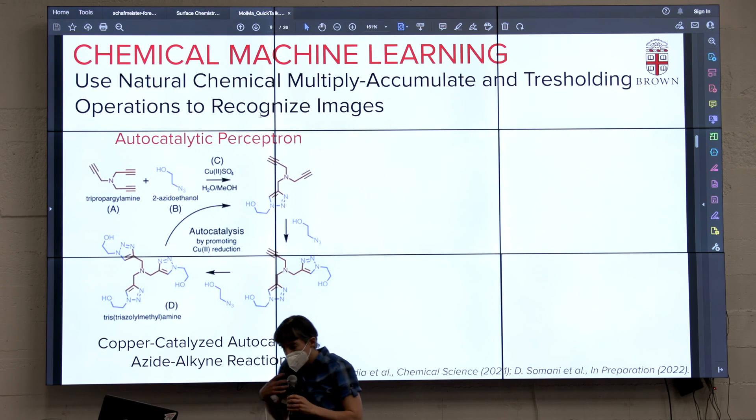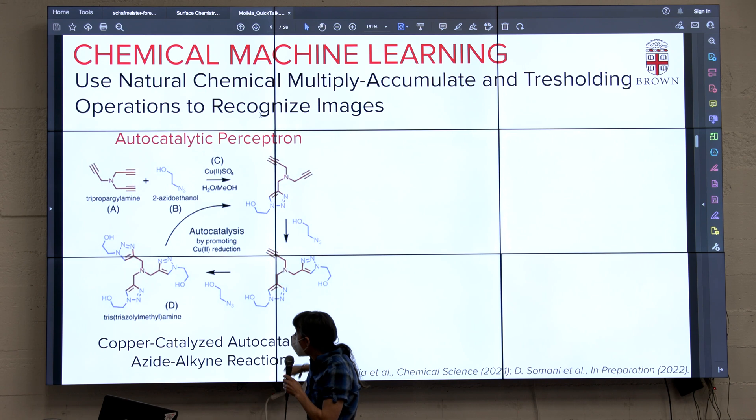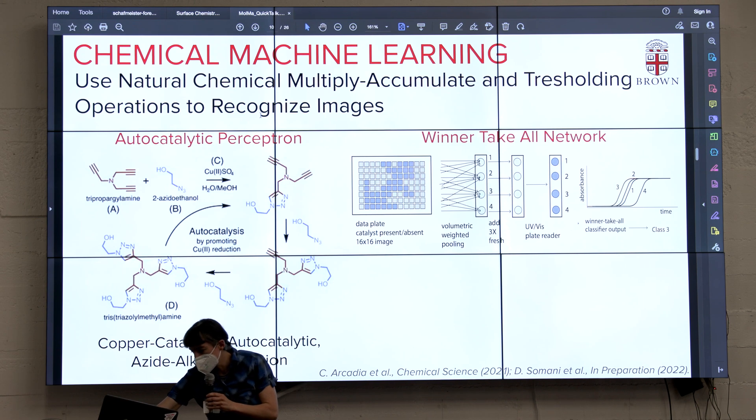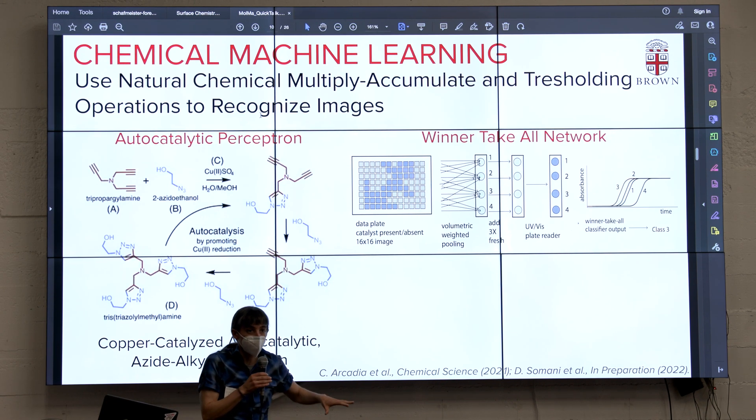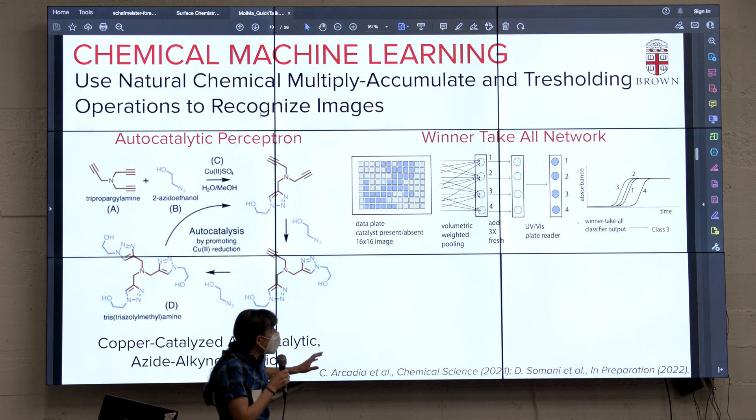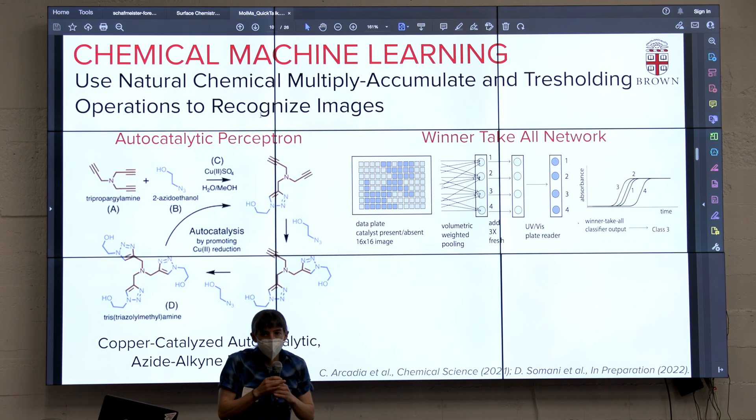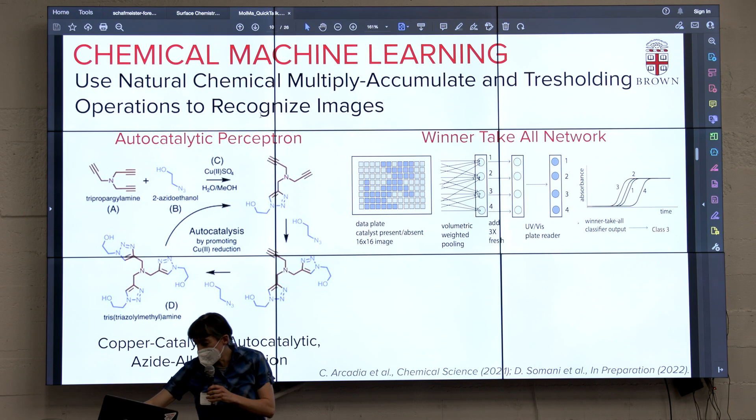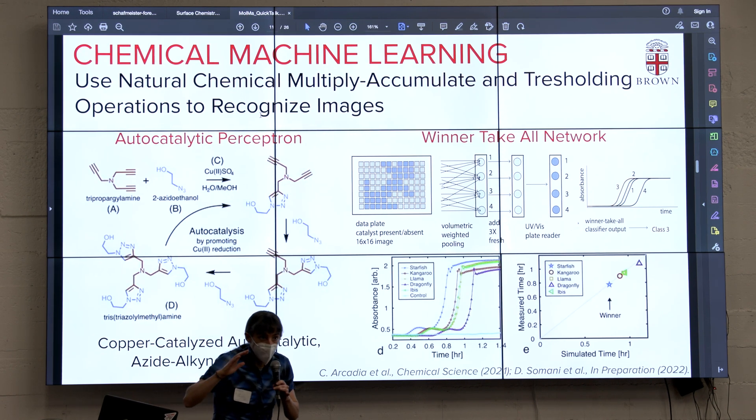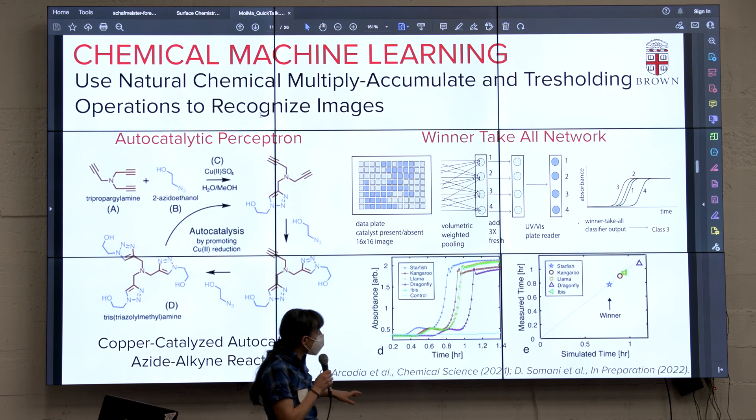Before I pivot to the problem, we implemented this using a specific copper-catalyzed autocatalytic reaction. We made a winner-take-all network. We haven't published all results yet—some will be posted in the next month. We can go beyond one layer and do multiple layers of networks that cascade in solution to do machine learning. My point here is that in doing this, we're doing chemistry through autocatalytic reactions, but we're missing wires.